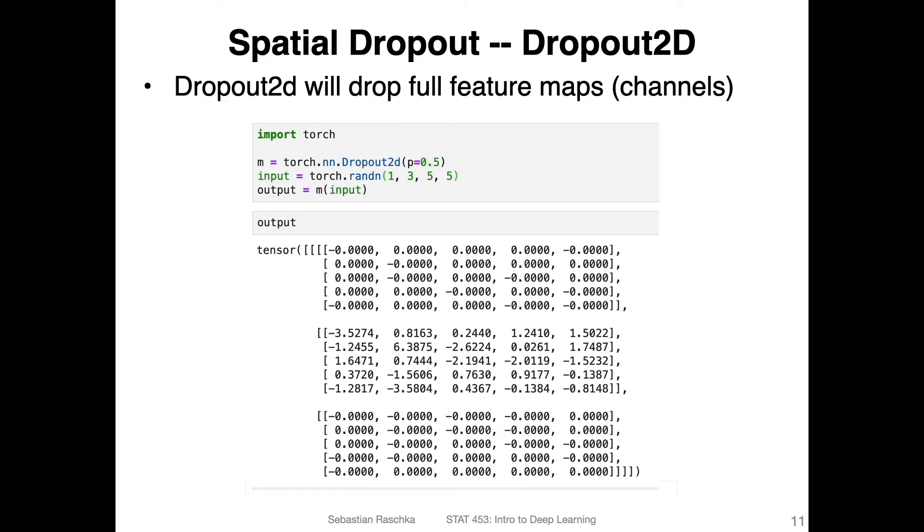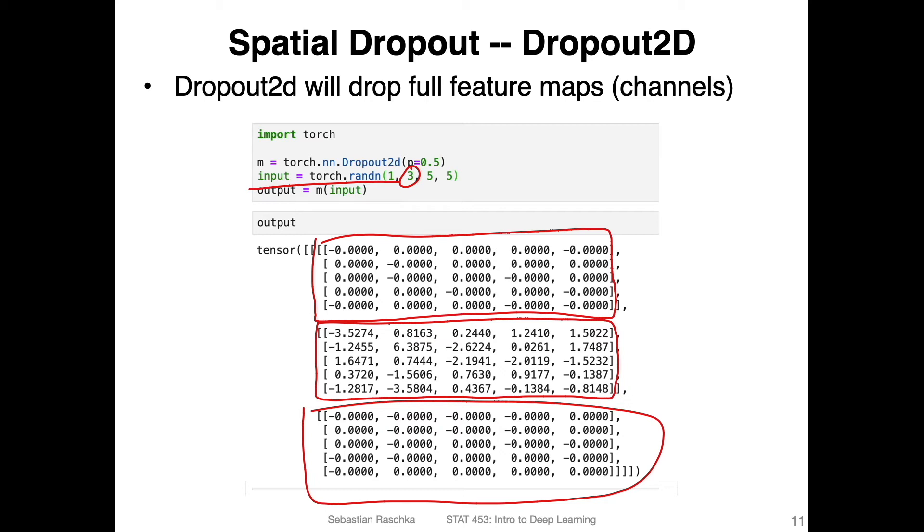Here's an example showing you how that looks like. So each box here represents one channel. Here I have just some random example input with three channels. And you can see two of these channels are now zeroed out. That's how spatial dropout works. And that's all there is to it. It's not very complicated.